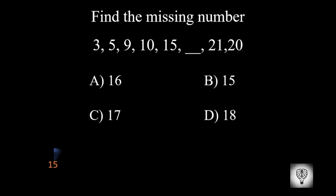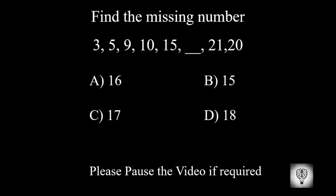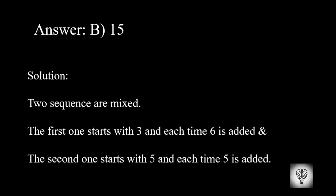Find the missing number. Please pause the video if required. The correct answer is 15. In this problem, 2 sequences are mixed. The first one starts with 3 and each time 6 is added. The second one starts with 5 and each time 5 is added.